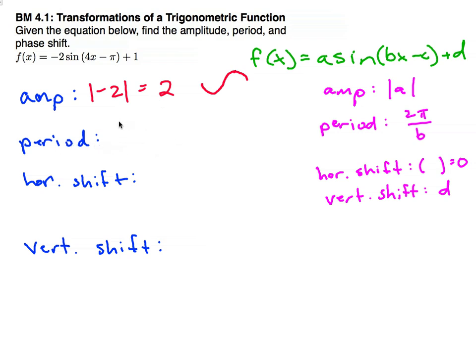The next is period. That's 2 pi divided by b, and in this case b is 4. And simplifying that, you get pi over 2. Now, what that means is normally it would take 2 pi to make one full cycle down and back up. This time it's only going to take pi over 2. So when we graph these, we'll need to make sure and mark our axis accordingly.